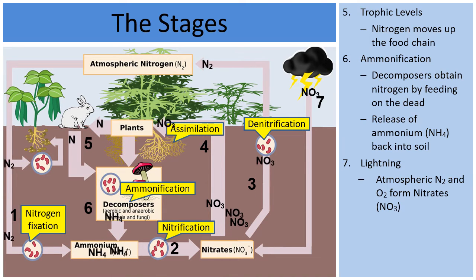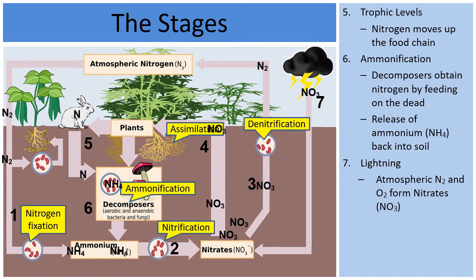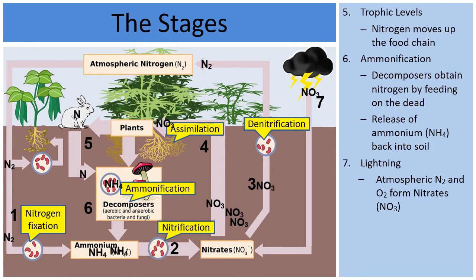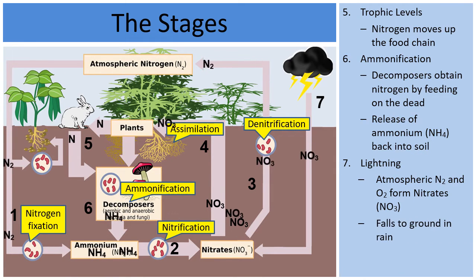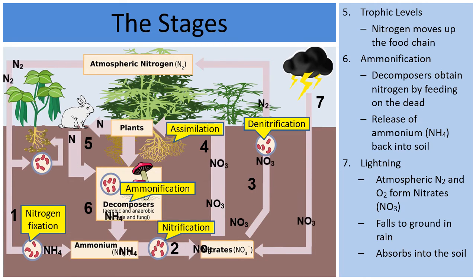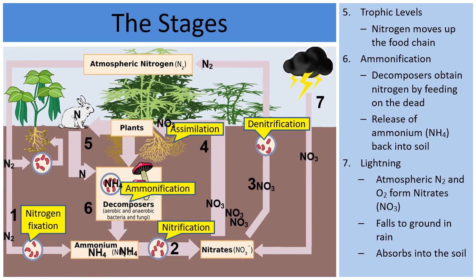There is another way for NO₃ nitrates to form. Nitrogen (N₂) and oxygen in the sky, through the energy of lightning, are broken down and rearranged into NO₃ nitrates. When it rains, the nitrates fall to the ground and mix in with the nitrates produced in area two. This is just another way that nitrogen can get into the soil to then be used by other forms of life.